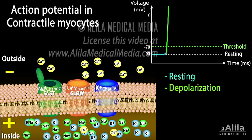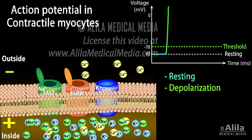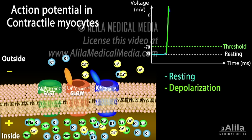L-type, or slow calcium channels, also open at negative 40 millivolts, causing a slow but steady influx. As the action potential nears its peak, sodium channels close quickly, voltage-gated potassium channels open, and these result in a small decrease in membrane potential, known as the early repolarization phase.